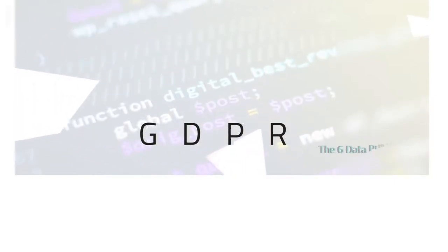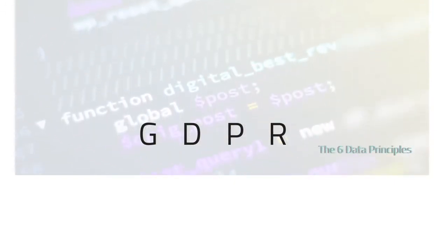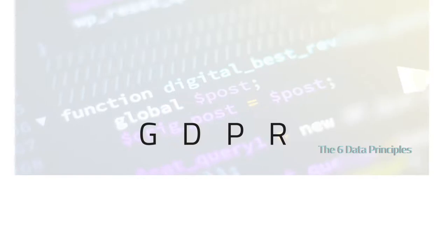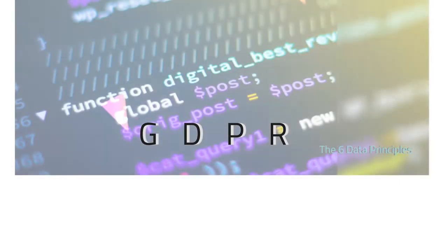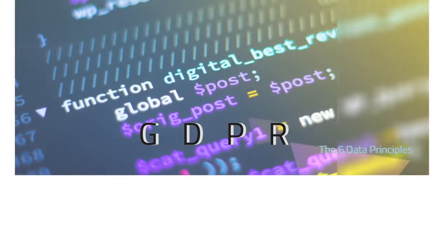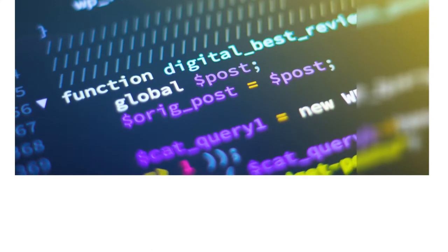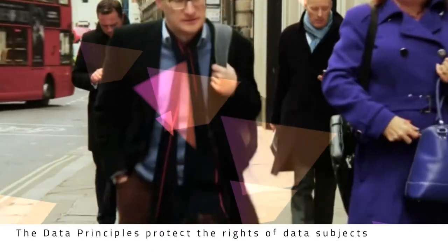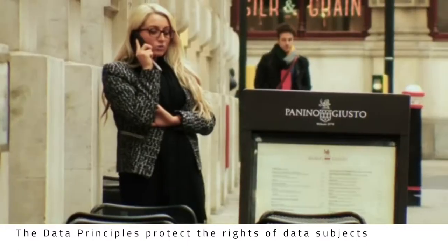Here is an introduction to the six data principles. Lawfulness, fairness and transparency. Anyone who we collect data from, a data subject, must be told what we will do with their data to ensure transparency.